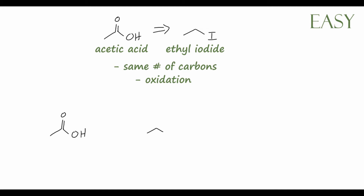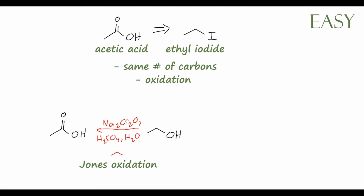If we take ethanol, which is a primary alcohol, we can perform a Jones oxidation with sodium dichromate, sulfuric acid in water — and a lot of times acetone is used as a solvent — and that will oxidize the alcohol all the way to the carboxylic acid. From there, it should be straightforward to see the relationship between our starting material, ethyl iodide, and ethanol. If we take ethyl iodide and perform an SN2 reaction using sodium hydroxide in a polar aprotic solvent like DMSO or DMF, we form ethyl alcohol. That's a very simple retrosynthesis for acetic acid.